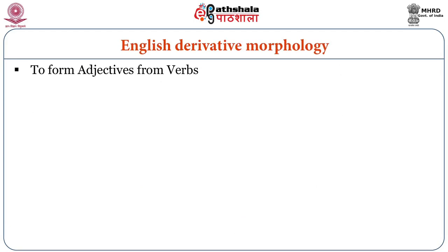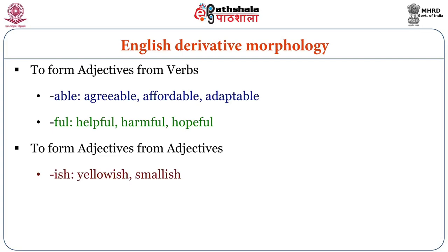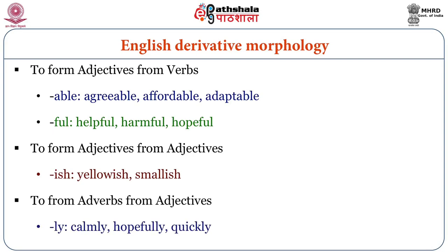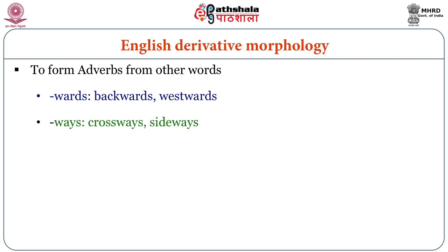To form adjectives from verbs, we use '-able' — 'agreeable,' 'affordable,' 'adaptable.' With '-ful' we have 'helpful,' 'harmful,' 'hopeful.' To form adjectives from adjectives, we use '-ish' — 'yellowish,' 'smallish.' To form adverbs from adjectives we use '-ly' — 'calmly,' 'hopefully,' 'quickly.' To form adverbs from other words we use '-wards' — 'backwards,' 'westwards' — or '-ways' — 'crossways,' 'sideways.' This is English derivative morphology.